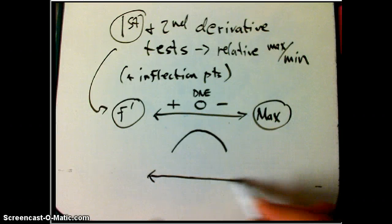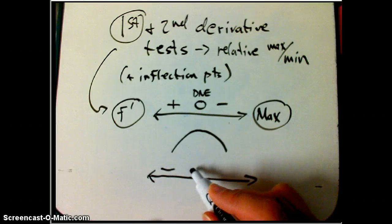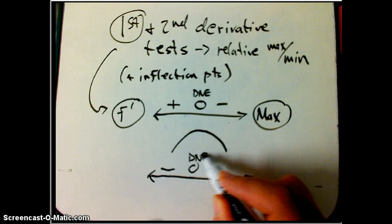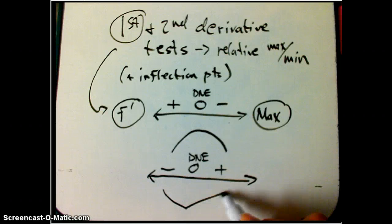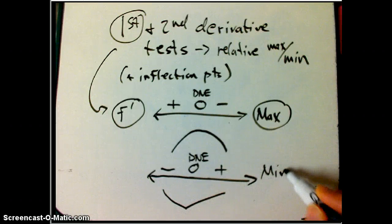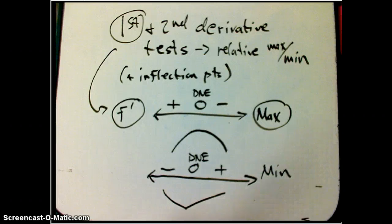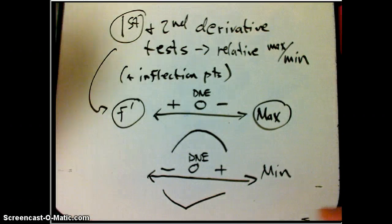If you see down, flat or corner or cusp or whatever, and then up, it's looking like this, maybe with a corner. That's going to be a min.